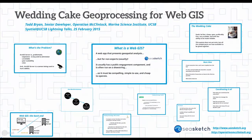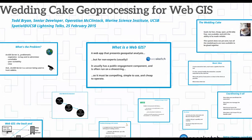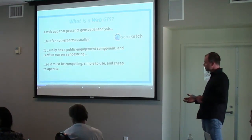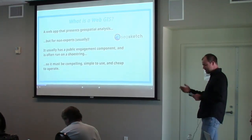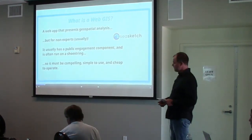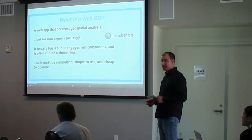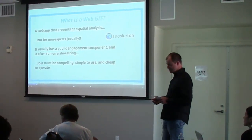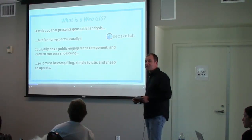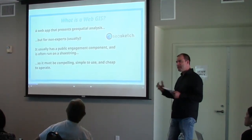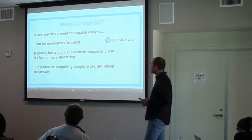I'm Todd. I work on a WebGIS called cSketch — you can see it at cSketch.org. A WebGIS is a web application that presents geospatial analyses to varying people. It's often intended for non-experts and sometimes used for public engagement. Frequently it runs on a shoestring budget, so it needs to be simple, fast, compelling to use, and cheap to operate.